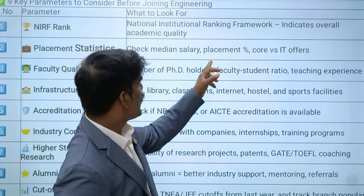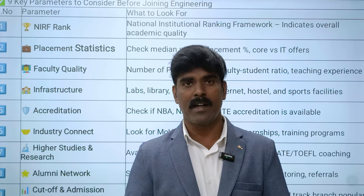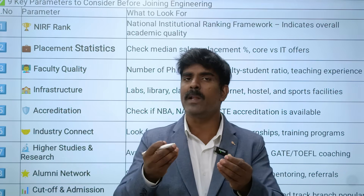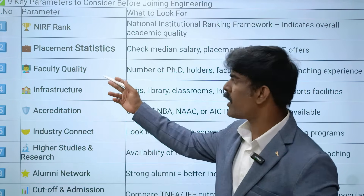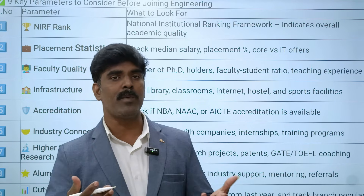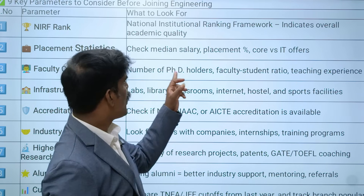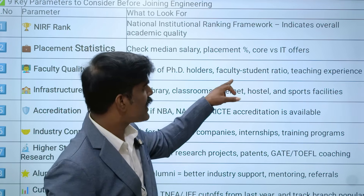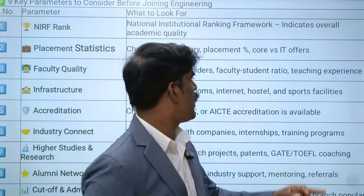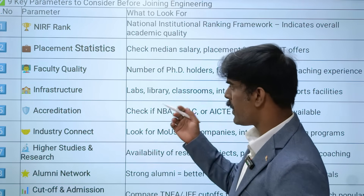Also check average salary and placement percentage - whether you want to go into higher studies, core engineering, or IT. The third important parameter is faculty quality. Faculty-student ratio is very important - for example 15:1, 20:1, or 25:1 - along with the teaching experience of faculty.